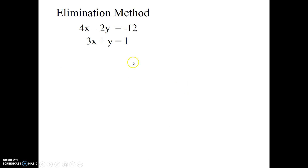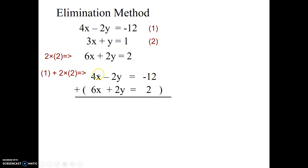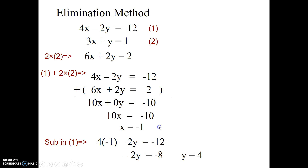Another elimination example — a bit harder. I can't just add or subtract straight away because I'd still have both x and y. So I multiply equation two by 2 to get 6x plus 2y equals 2. Writing equation one below it, the negative 2y and positive 2y cancel when I add them, leaving 10x plus zero y equals negative 10, so x equals negative 1. Substituting back gives y equals 4 — the same answer as before.